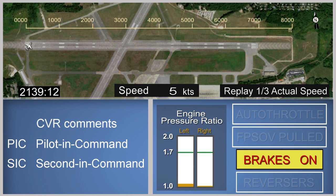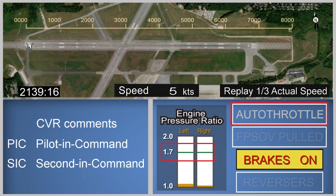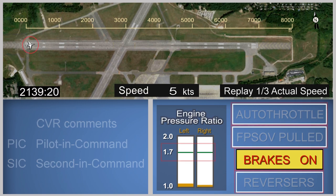Based on a review of previous takeoff attempts, the flight crew likely targeted an engine pressure ratio setting, or EPR, of 1.7, which is shown with a green horizontal bar. In addition, there are indications for activation of the autothrottle, flight power shutoff valve handle, or FPSOV, brakes, and thrust reversers. The animation is first shown at one-third speed and then plays again at actual speed.